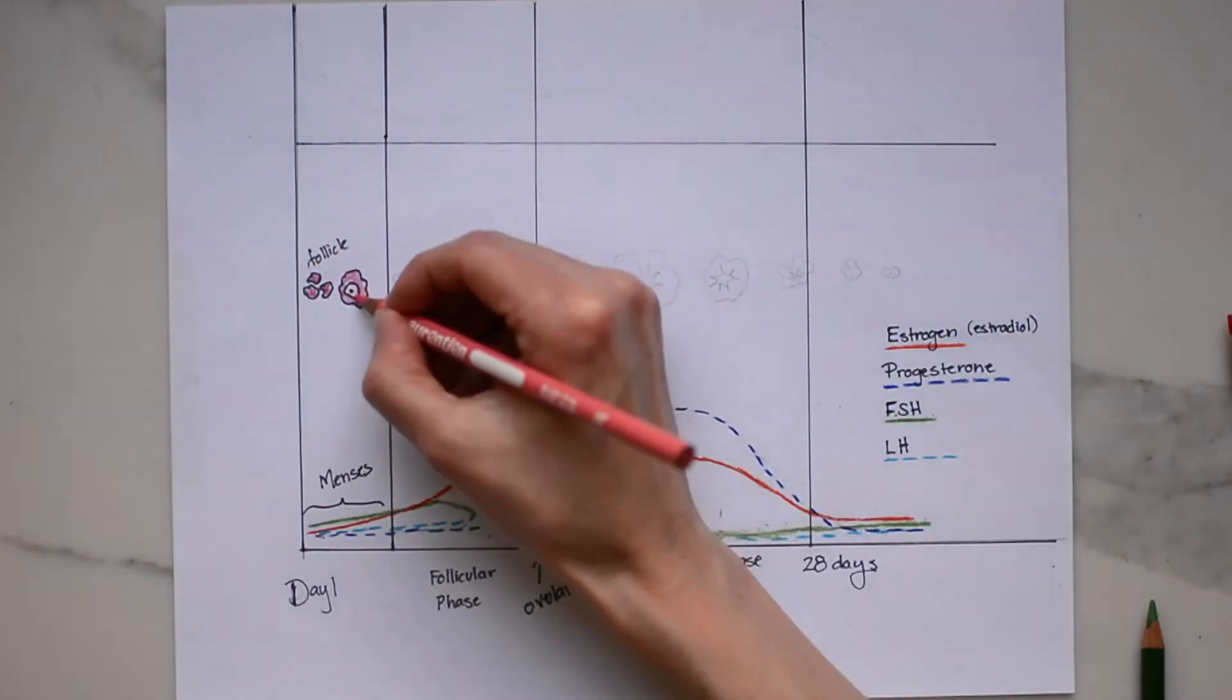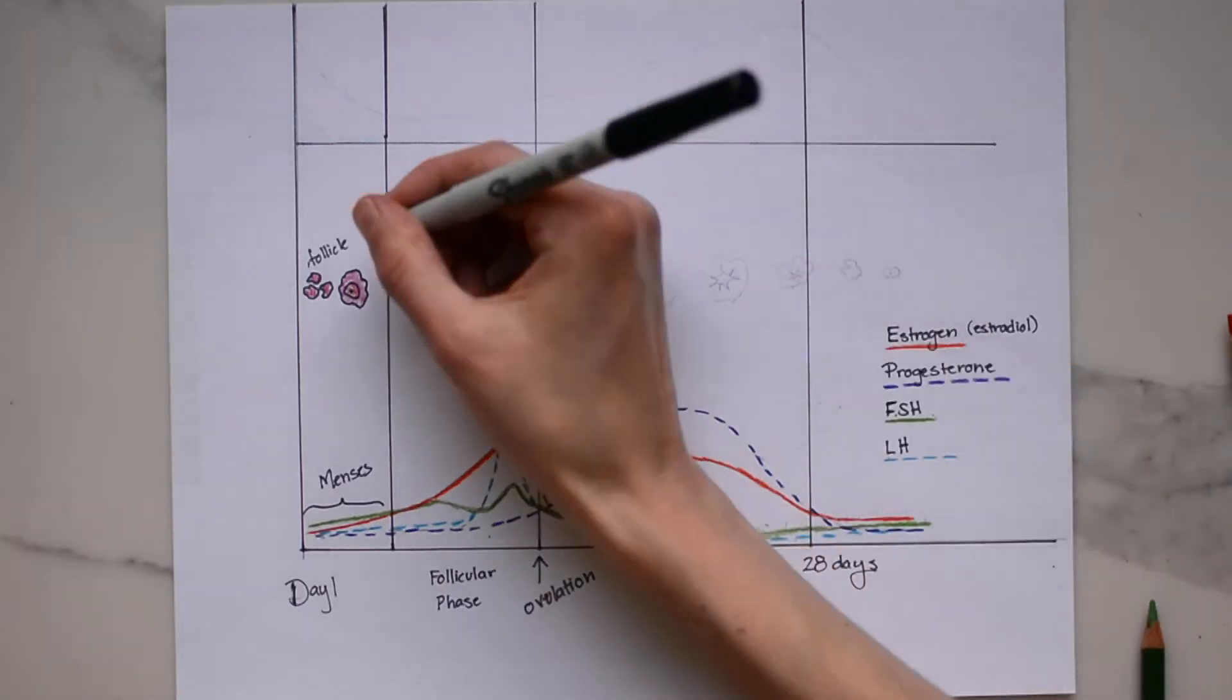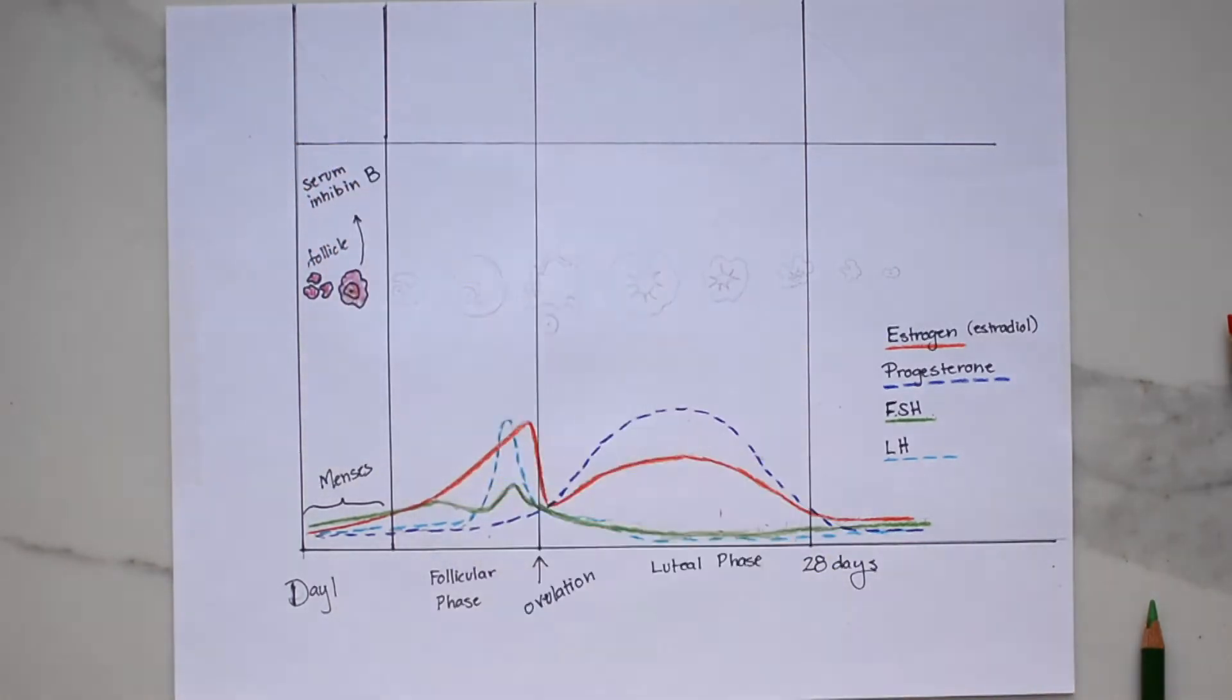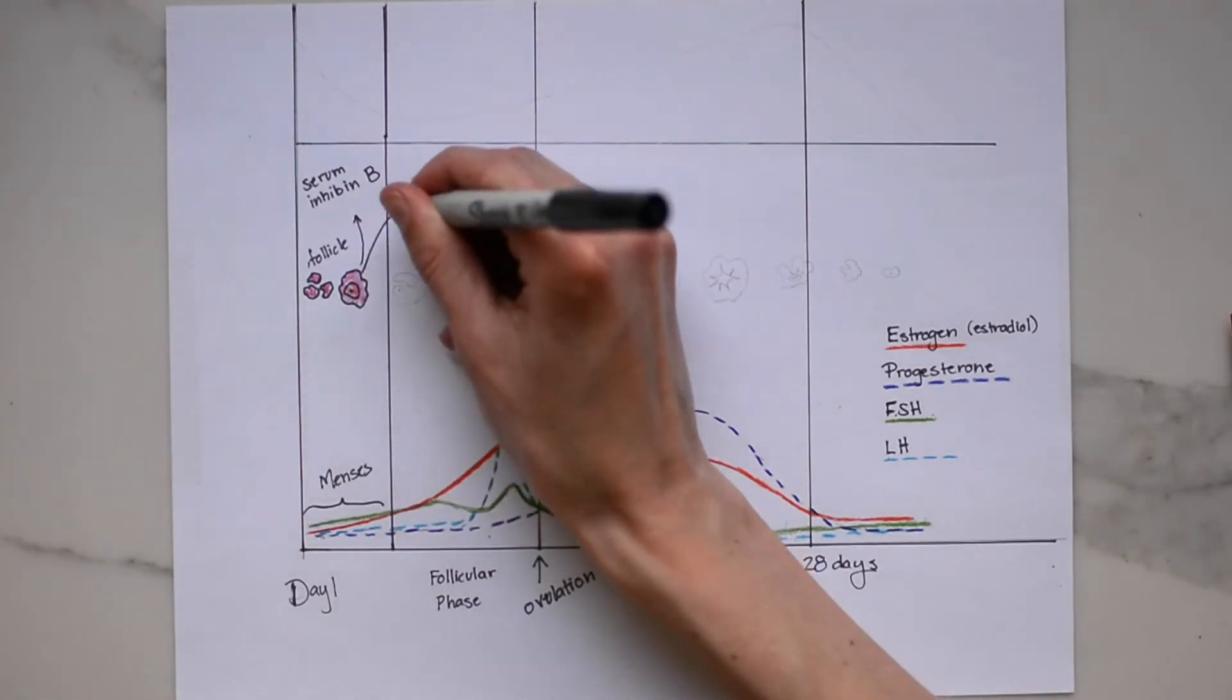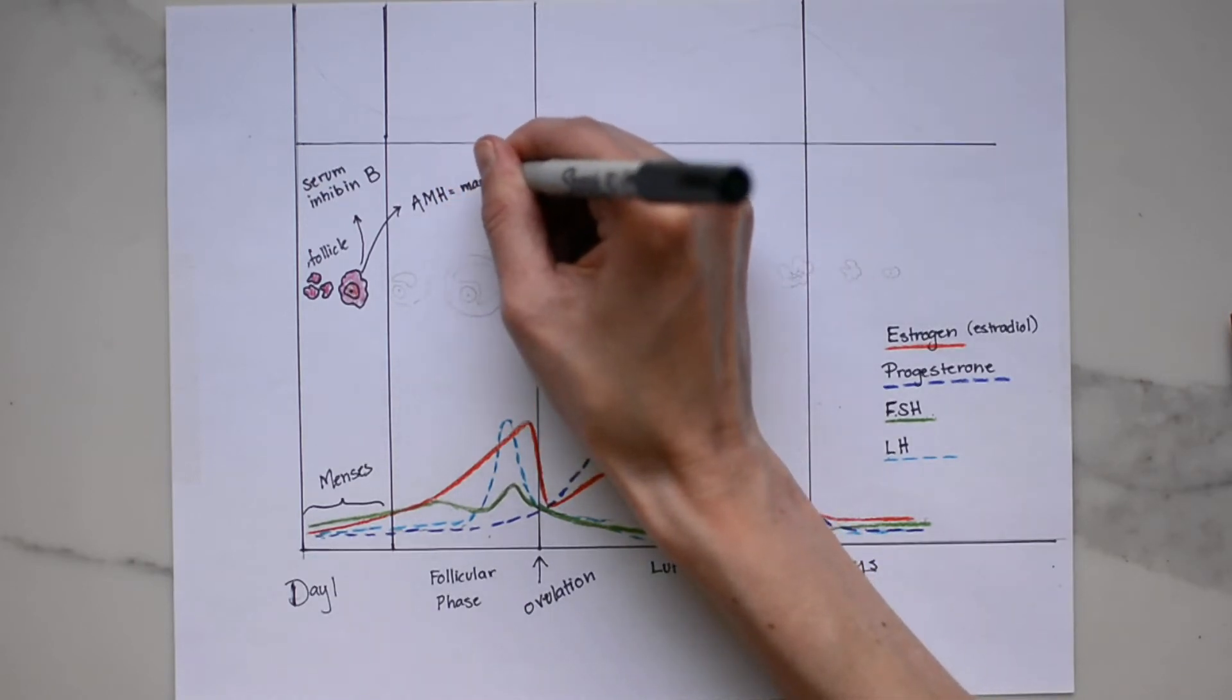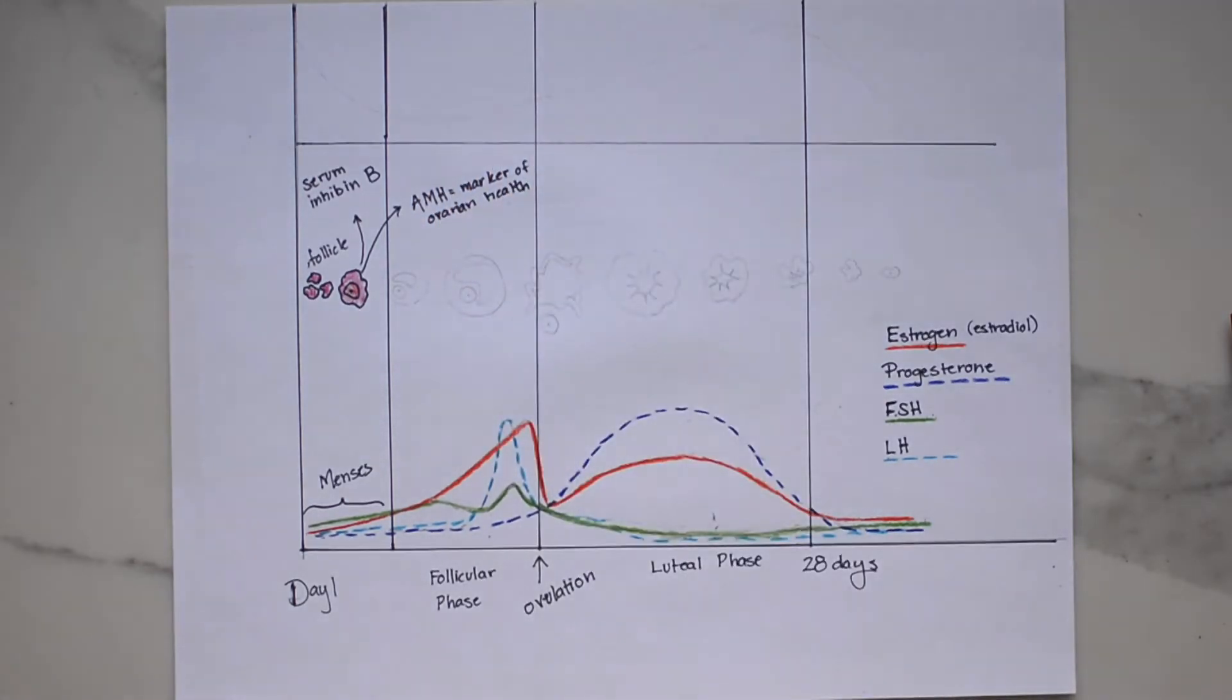And a follicle is a fluid filled sac that contains the immature egg or what we call oocyte. So this is relevant when a woman is being assessed for fertility because some specialists using an ultrasound will count the number of follicles developing in both ovaries to determine what we call the antral follicle count. When these follicles are developing, they produce serum inhibin B, which suppresses the rise of FSH as you can see along the chart. Now these antral follicles also secrete anti-müllerian hormone known as AMH. This is a marker of ovarian health and aging and AMH has gained widespread attention for its use in assessing women's ovarian reserve and is an important measurement when investigating infertility.